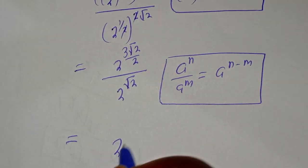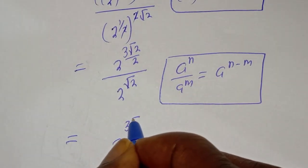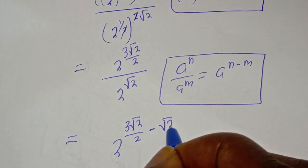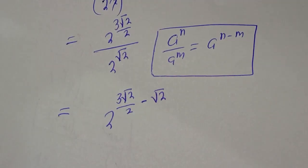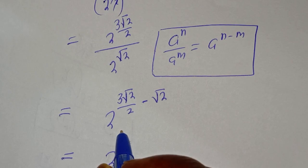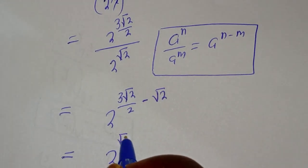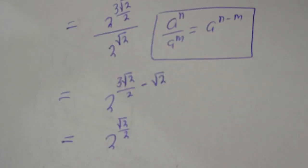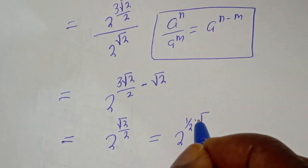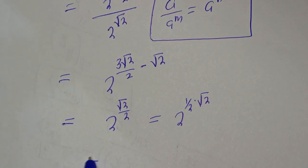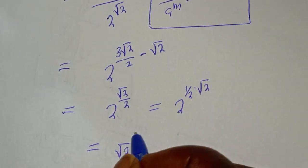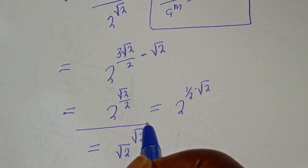This is equal to 2 raised to power 3 root 2 over 2, minus root 2, which simplifies to 2 raised to power root 2 over 2 times root 2. This equals 2 raised to power 1 over 2 multiplied by root 2, which equals square root of 2 to the power of square root of 2, and this is the final answer.